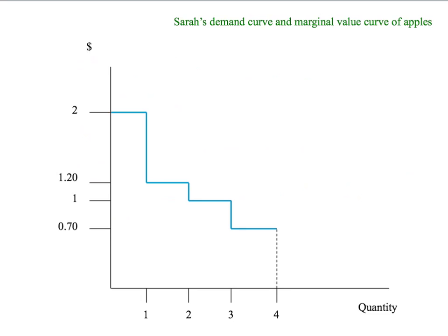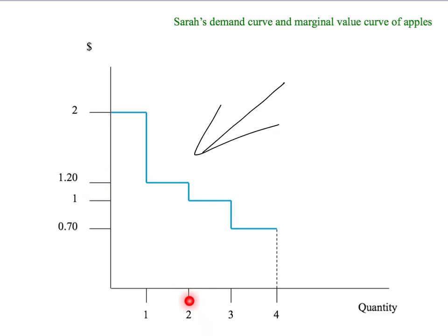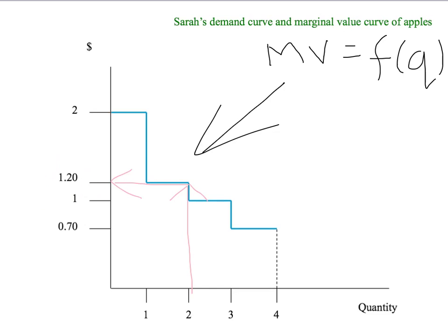We've drawn Sarah's marginal value curve for apples. That involves a quantity of apples on the horizontal axis, dollars on the vertical axis, and then we've plotted the marginal value of Sarah's first apple, the marginal value of her second apple, and so on. The marginal value curve tells us that given a quantity such as two apples, the height of the marginal value curve at that quantity tells us Sarah's marginal value of the second apple, which is $1.20. So the marginal value curve is a function from quantity to dollars.